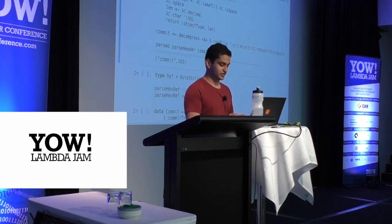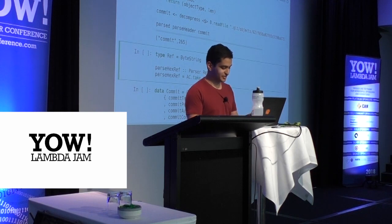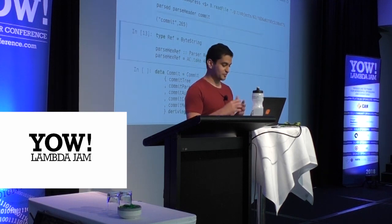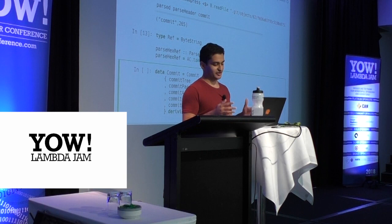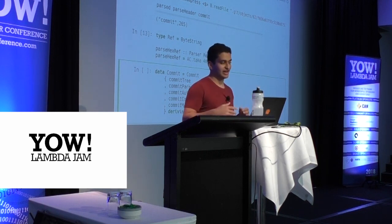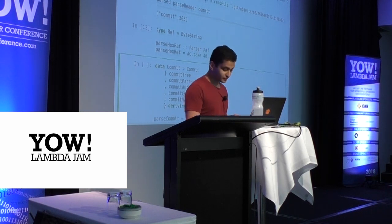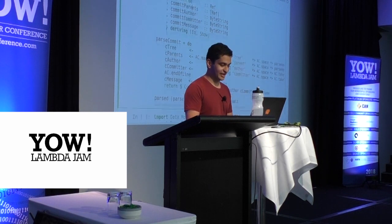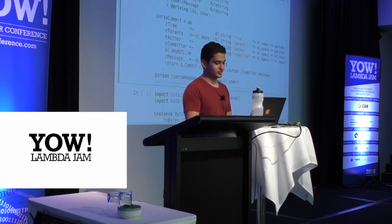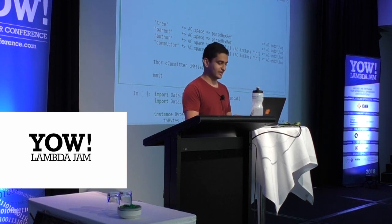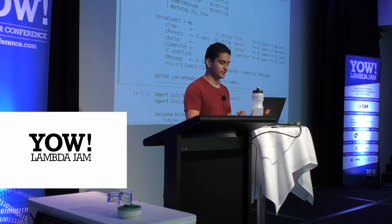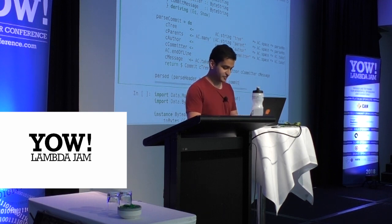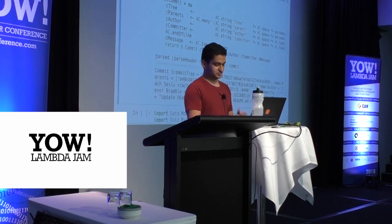Now I want to parse a commit. A commit has a tree, parents, author, committer, and a message. A commit can have multiple parents — the initial commit has zero parents, and a merge commit can have two or more, known as an octopus merge. Parsing this is very easy with Haskell parser combinators. I parse my tree, a space, a ref, end of line — same with parent, author, committer — then a byte string for the message, and return a commit.